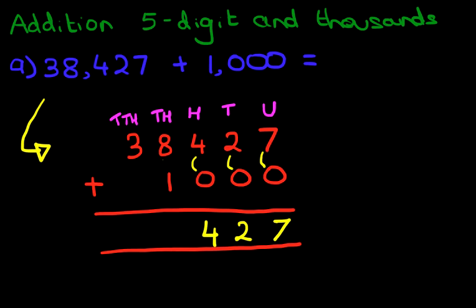As for the thousands, we are adding 8 and 1. 8 plus 1 is 9. The tens thousands, we have 3 plus 0. So that remains 3. And we have our answer. It is 39,427.